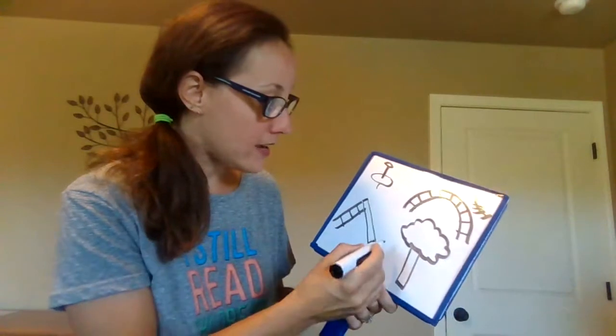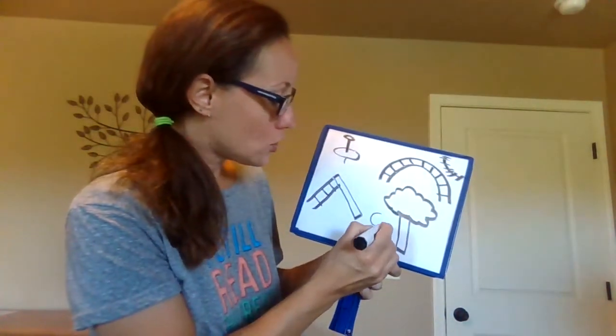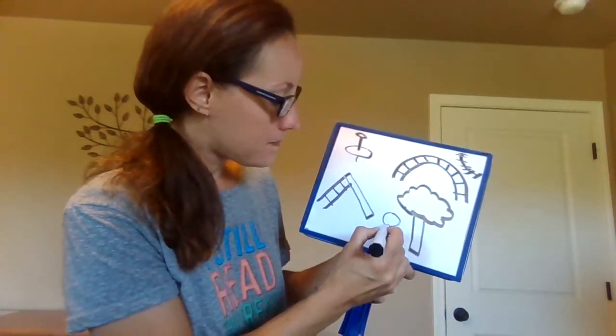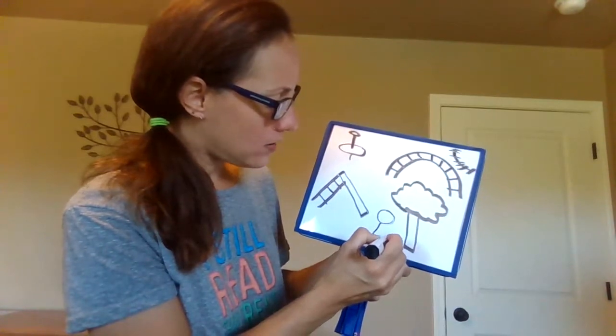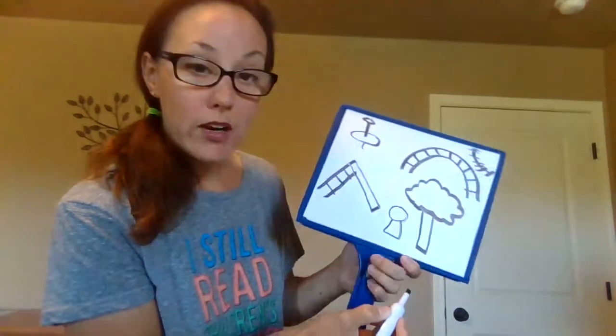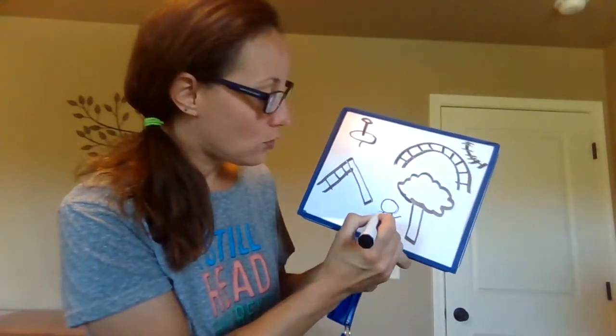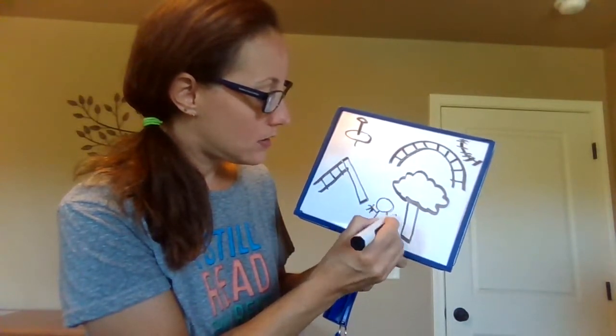So I'm going to draw my body. I think of a circle shape for my head. Maybe a rectangle or square for my body. Of course I need arms and fingers.